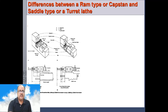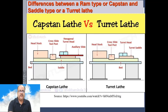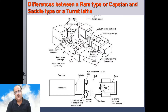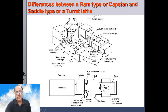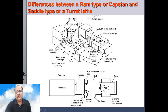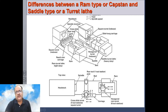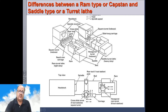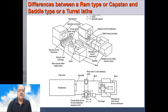Looking at the diagram, this is a turret lathe and this is a capstan lathe. The capstan lathe is a ram type lathe, and the turret lathe is a saddle type lathe. In the saddle type, on the bedway there is a saddle over which the hexagonal turret is directly mounted. In the ram type or capstan construction, on the bed there is a saddle, on top of the saddle there is a ram, and on top of the ram the hexagonal turret is mounted.